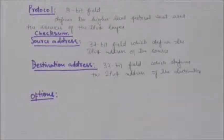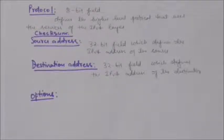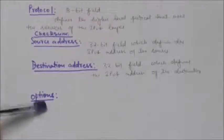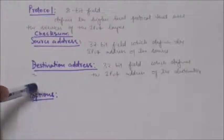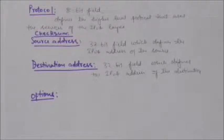The header of an IPv4 datagram is made of two parts: a fixed part and a variable part. The fixed part is 20 bytes long, and the variable part comprises the options, which can be a maximum of 40 bytes. Options are not required for a datagram — they can be used for network testing and debugging.